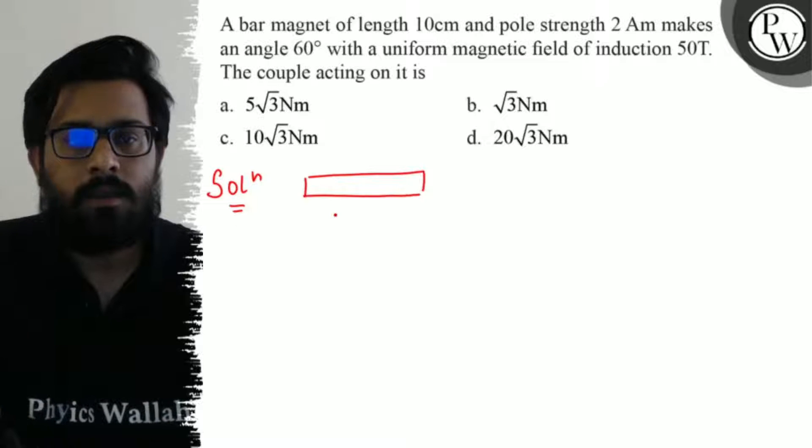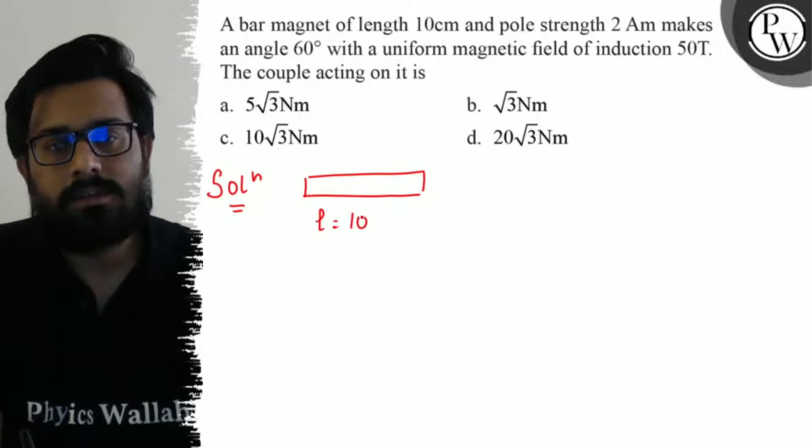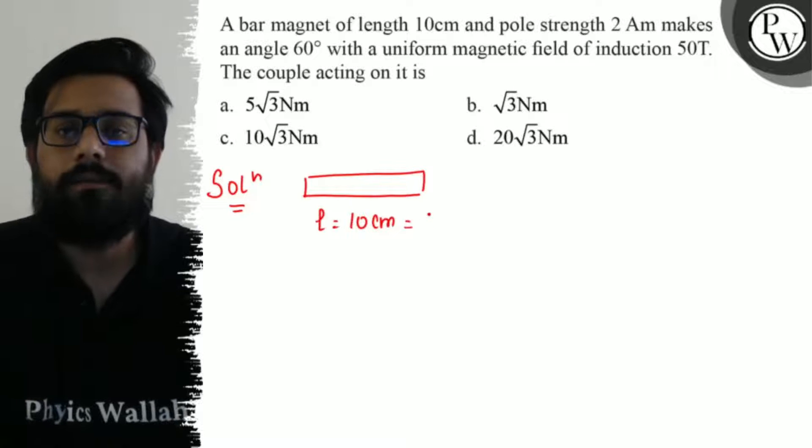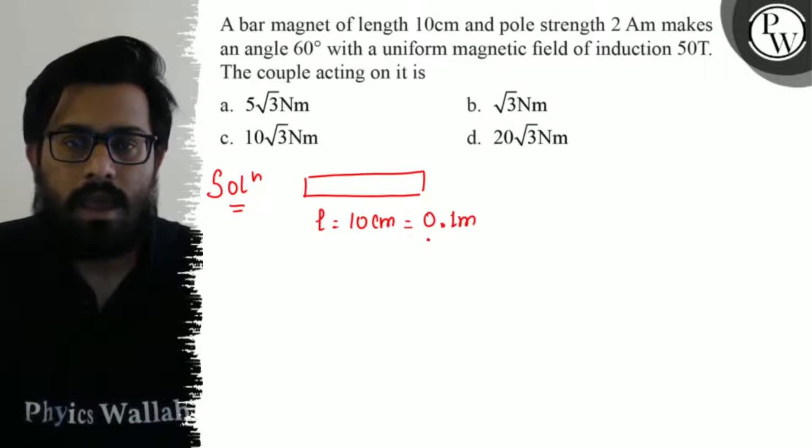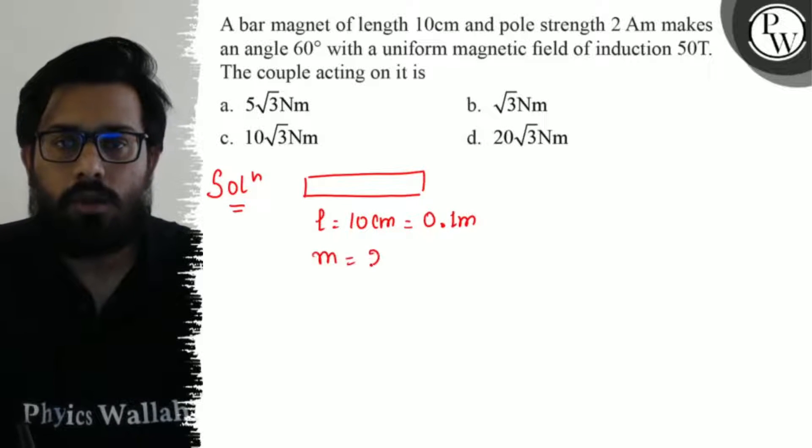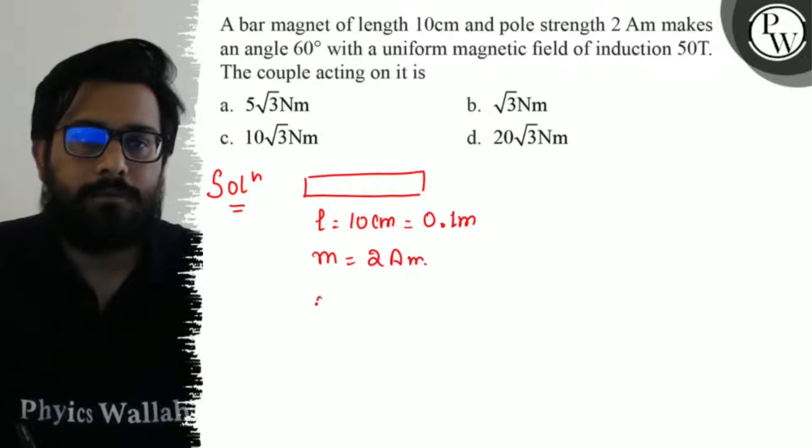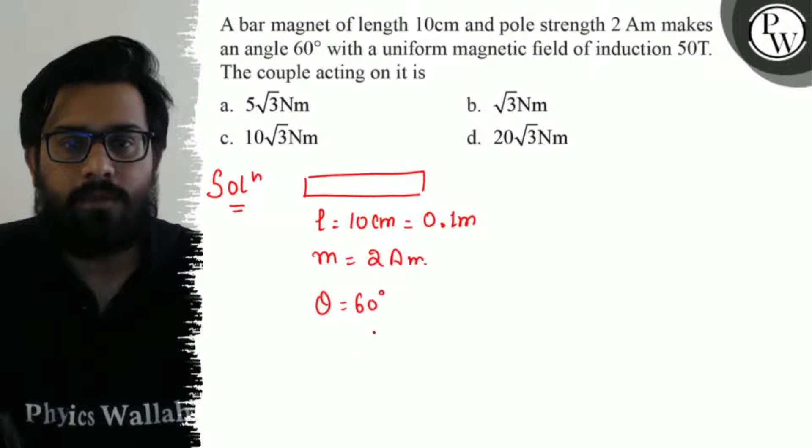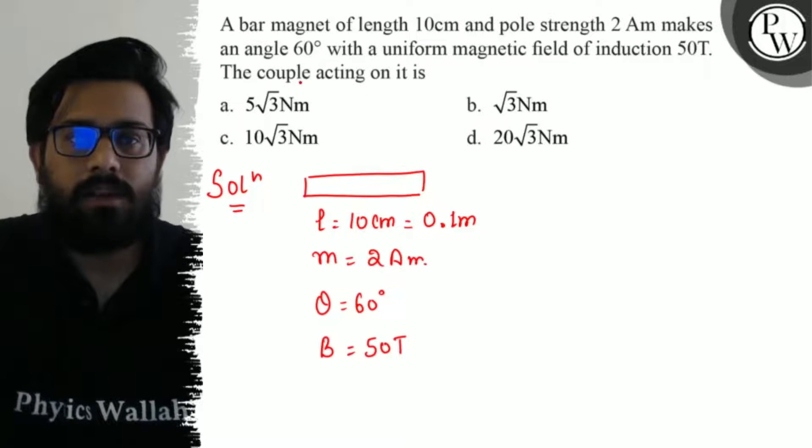So we have this bar magnet having a length of 10 centimeter or 0.1 meter, having the pole strength of 2 ampere meter, making an angle of 60 degree with the uniform magnetic field of value 50 tesla, and I have to calculate the value of couple.